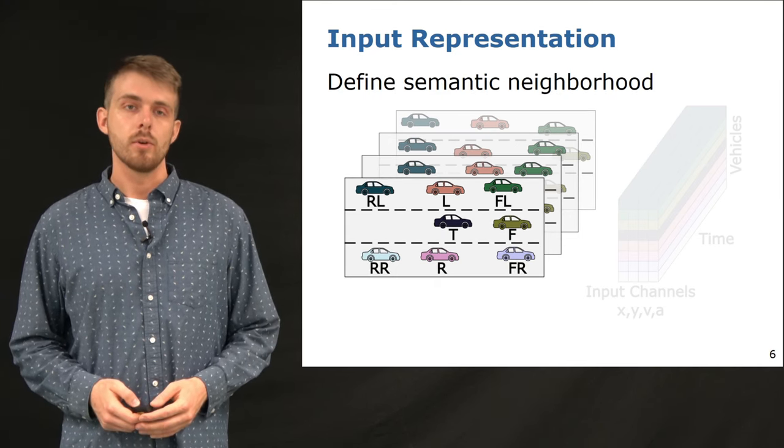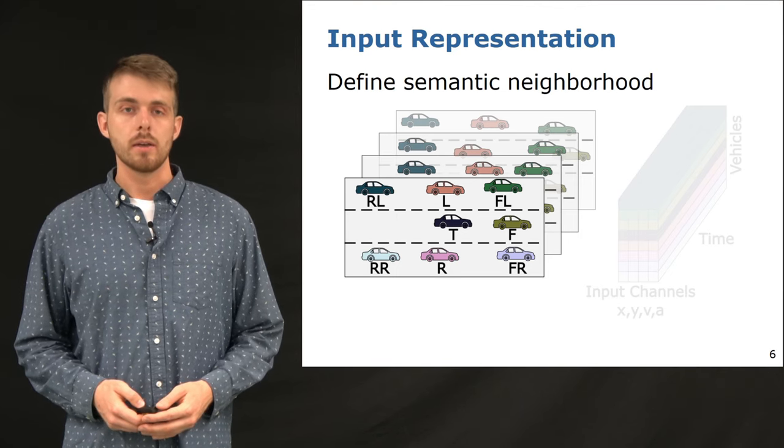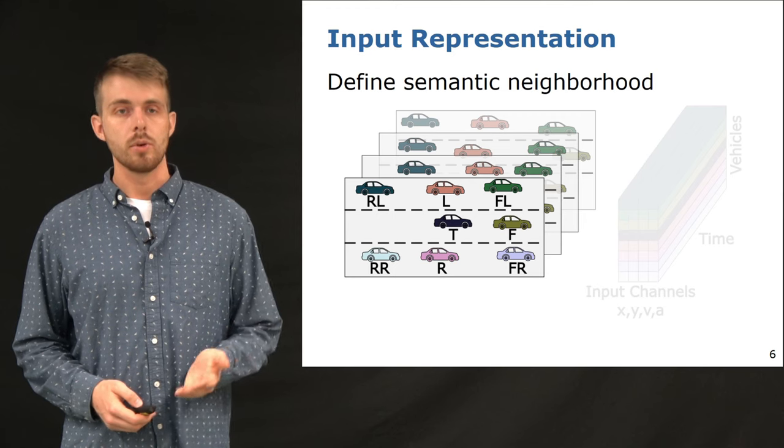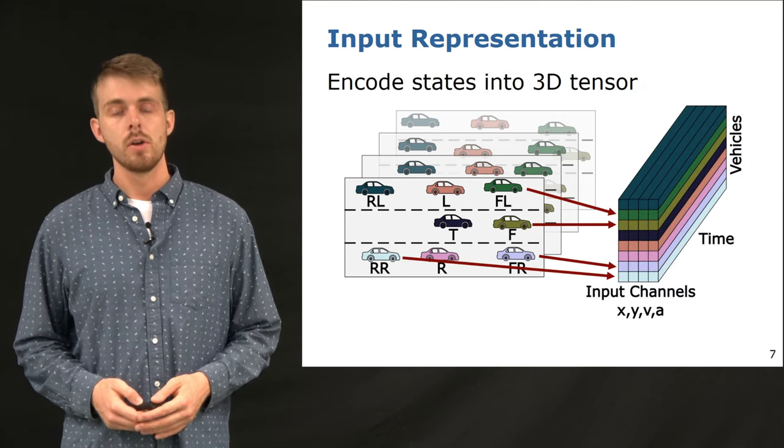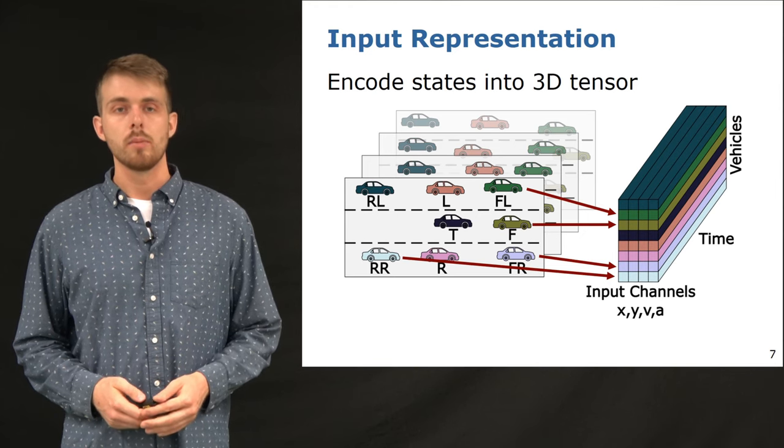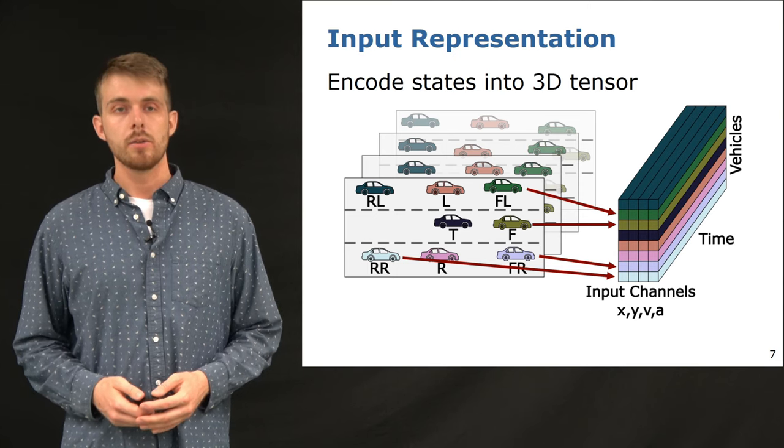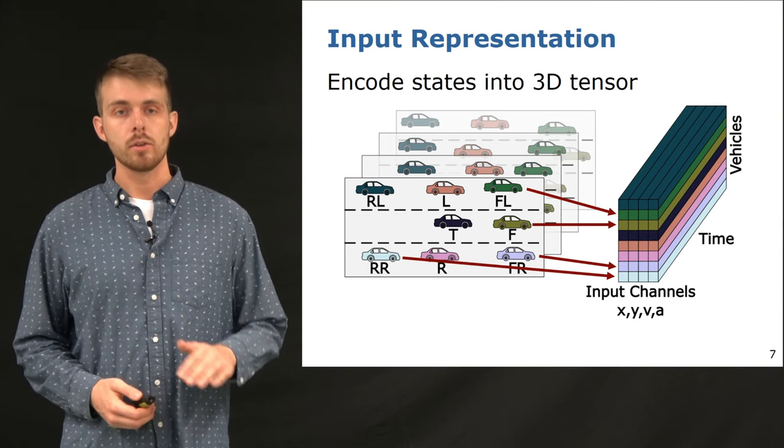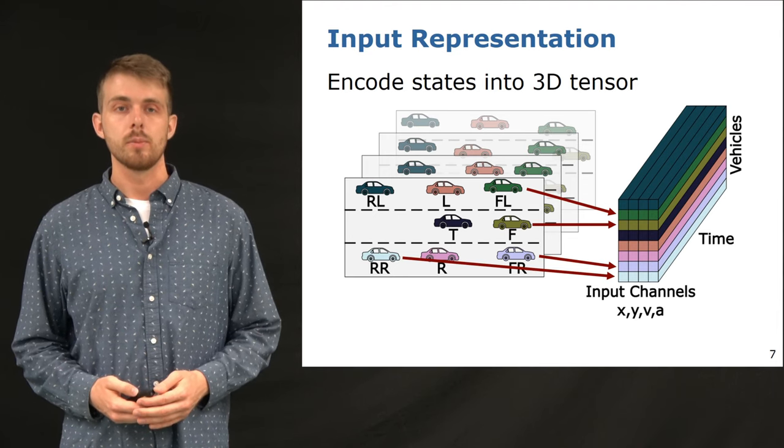We divide the neighborhood around the target car into cells, where each cell represents a semantic neighbor, like rear-left, rear-right, front-left and front-right. For each vehicle, we get a 2D map of input channels over time, indicated by the colors. We build the final 3D input tensor by stacking the 2D maps along a third spatial dimension based on the neighborhood assignment.